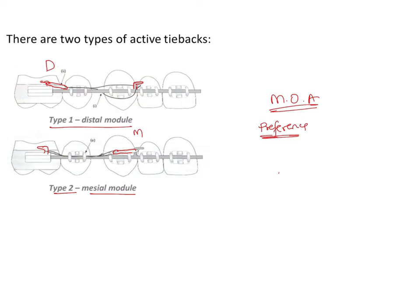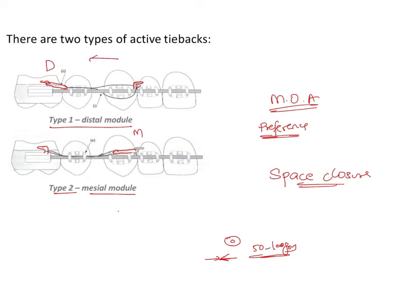Active tie back is used during space closure. The elastic module applies force — we expand it to twice its size and then engage it, so it tries to return to its original size. This exerts around 50 to 100 grams of force, bringing about a distalizing or retractive force that helps in space closure.